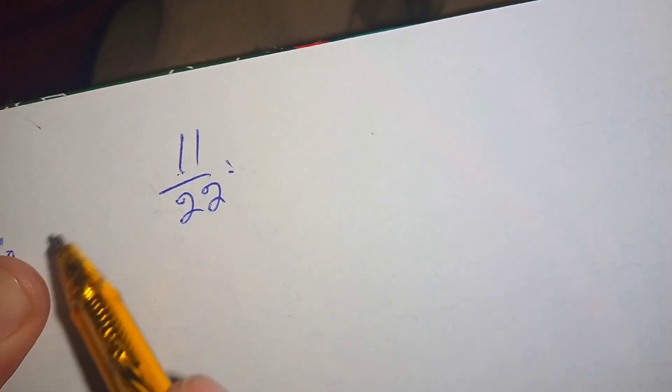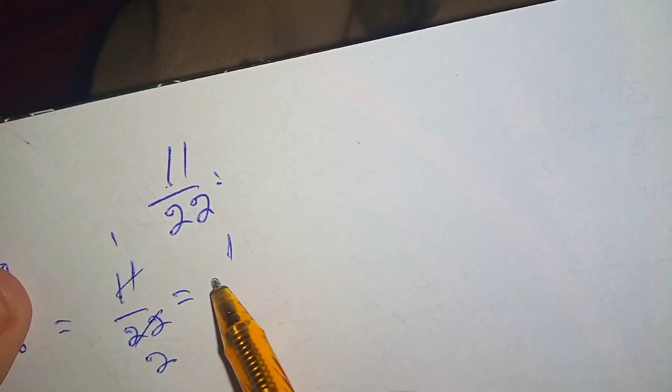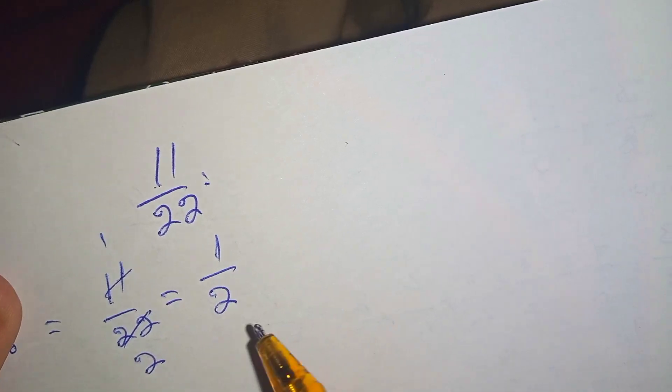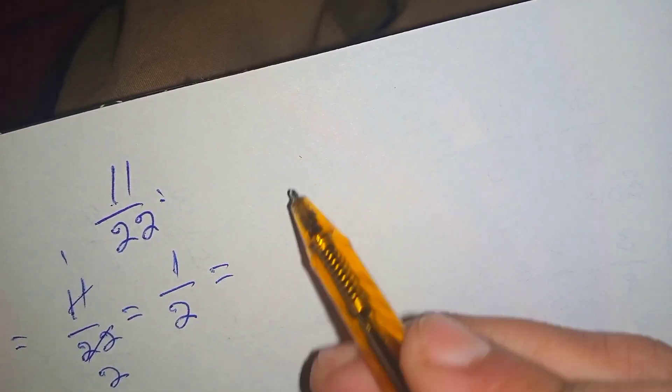This is also a proper fraction. First of all we will simplify this fraction. 11 over 22: since 11 times 1 is 11 and 11 times 2 is 22, it simplifies to 1 over 2. Now we can easily find the percentage of 1 over 2.